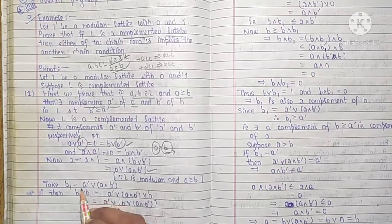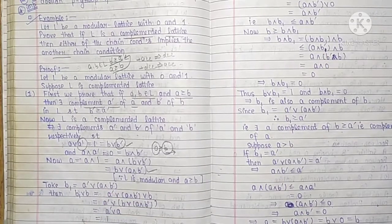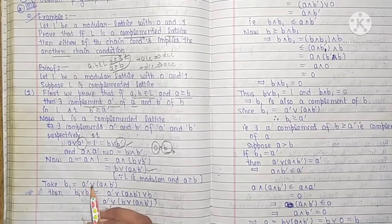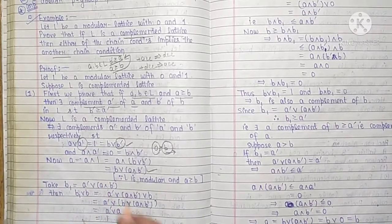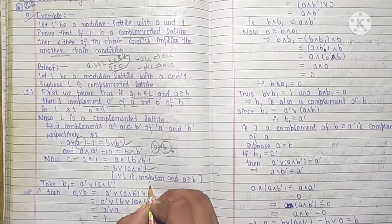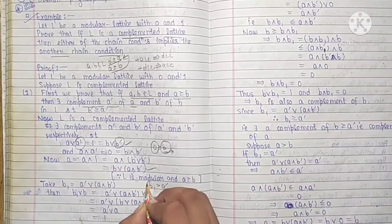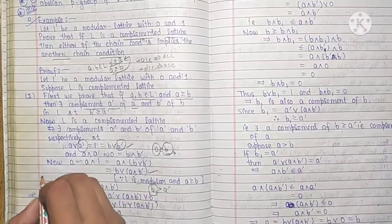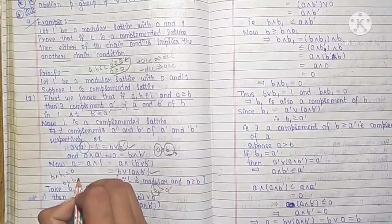So we define B1 = A' ∨ (A∧B'). First, observe that B1 ≥ A', because we have joined A' with another term, and a join is always greater than or equal to either component. So B1 is always greater than or equal to A'. We have proved B1 ≥ A'. Now we need to prove B1 is the complement of B, meaning we must show B∧B1 = 0 and B∨B1 = 1.